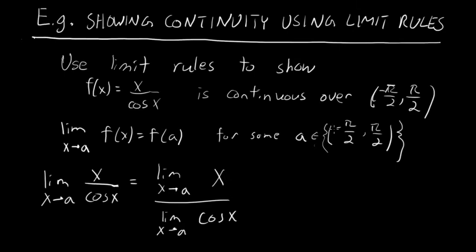Well, if a is some number in this open interval (-π/2, π/2), this limit will never be zero. Because cosine is zero only at odd multiples of π/2, and there is no odd multiple of π/2 in this open interval. If we talk about the closed interval, that would be a problem, but because we're speaking about the open interval, it's not a problem.